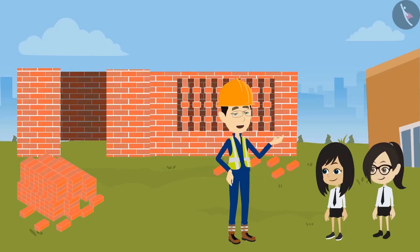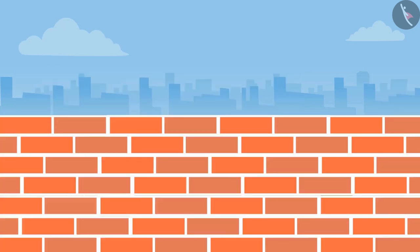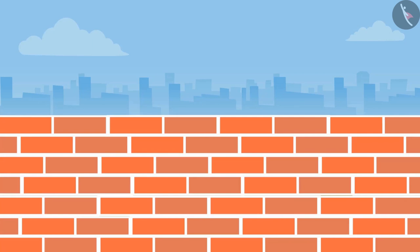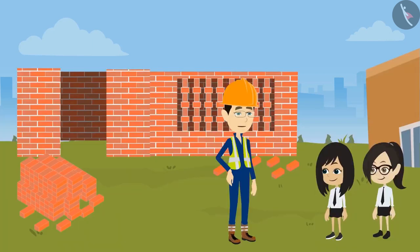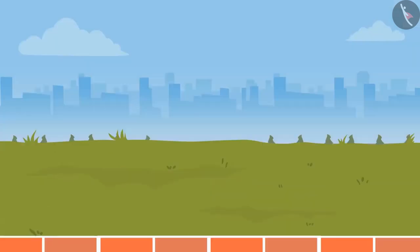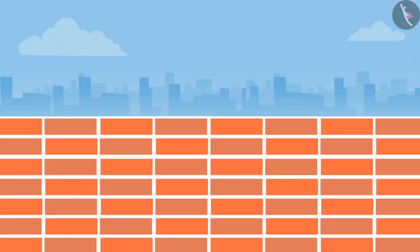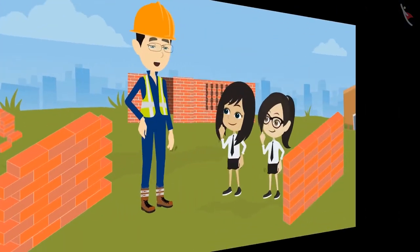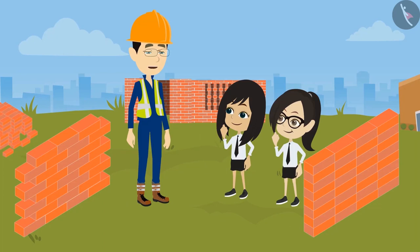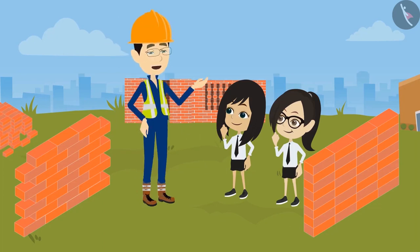Yes, even bricks used in simple walls are in a pattern. See this wall — it is made using many bricks. In making this wall, bricks are placed one above the other, but a special pattern has been chosen here. Can you suggest another pattern to make a wall? Yes sir, it will be easy. Why don't we put the bricks directly on top of each other? Even then a pattern will be formed. You are absolutely right. Now see, this is a wall made using your chosen pattern, and this is a wall made using the pattern I chose.